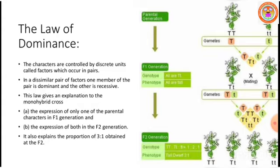In a dissimilar pair of factors, one member from the parent is recessive. The Law of Dominance gives an explanation from Mendel's monohybrid cross — you can observe the expression of only one parental character alone is seen in the F1 generation.